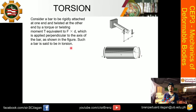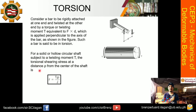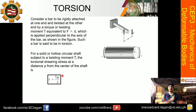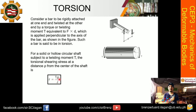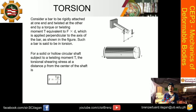For a solid or hollow circular shaft subjected to a twisting moment T, the torsional shearing stress at a distance rho from the center of the shaft is given by: tau (the torsional shearing stress) equals T times rho over J. The value rho is any distance from the center of the bar. Some problems require you to find the torsional shearing stress at a specific distance.